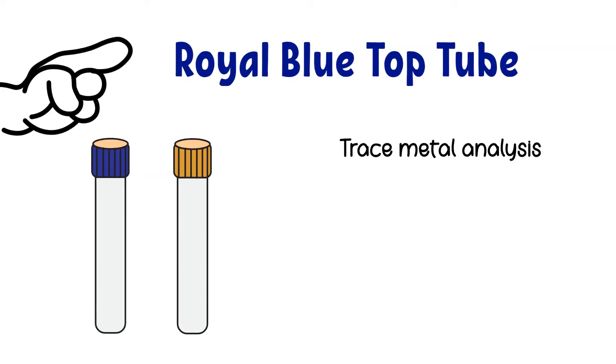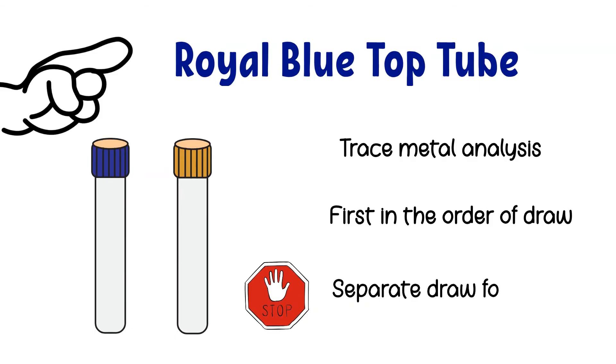Now, let me talk about the royal blue top tube a little bit. If a royal blue top tube or tan tube is being collected for trace metal analysis, the tube should be collected first or by another second venipuncture if blood cultures are also being ordered. This is to ensure that there is no trace metal contamination on the needle from puncturing the previous tube stopper.